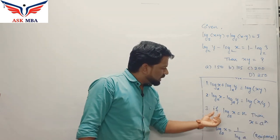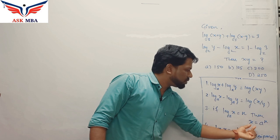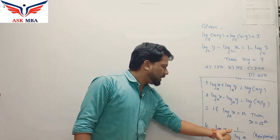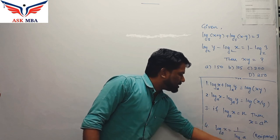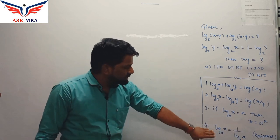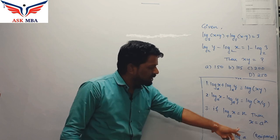The third one is if log x base a equal to n, then we can say x equal to a power n. Fourth one is log x base a is equal to 1 by log a base x, which you can clearly see these are reciprocals of each other where the base and the values get interchanged.